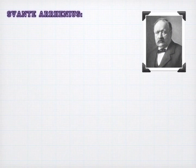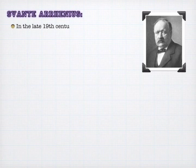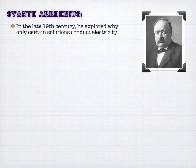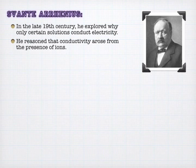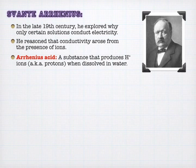So Svante Arrhenius, a very famous chemist, one of the first people to win a Nobel Prize. I think it's because he might have been on the committee, but he did a lot of great work with electrolytes. He realized that solutions needed electrolytes to conduct, and then he did more research about acids and bases and ended up coming up with the idea of what really an acid and base is.